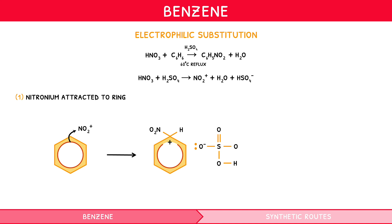Since the delocalised ring is now unstable, the bond to the hydrogen atom breaks, donating its electrons to re-stabilise the ring, indicated by a double-headed curly arrow from the benzene-hydrogen bond to the delocalised ring. The hydrogen ion that remains is attracted to the lone pair on the HSO4− ion, where it accepts these electrons to form a dative bond, indicated by a second double-headed curly arrow from the lone pair to the hydrogen.